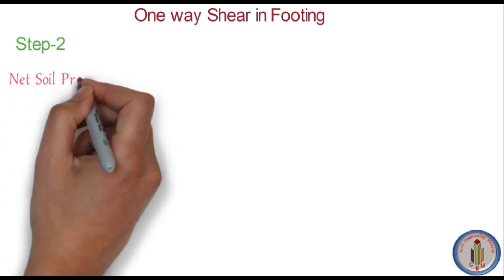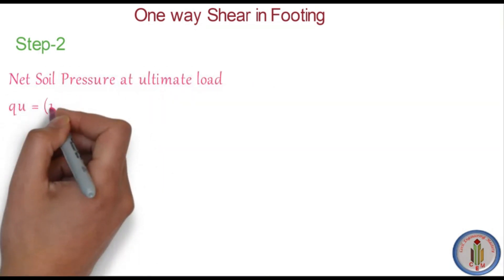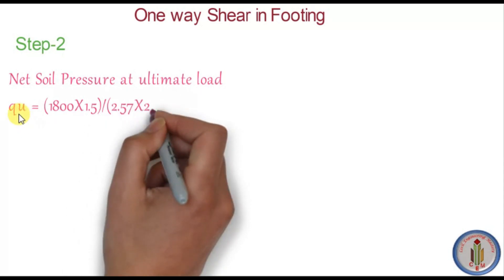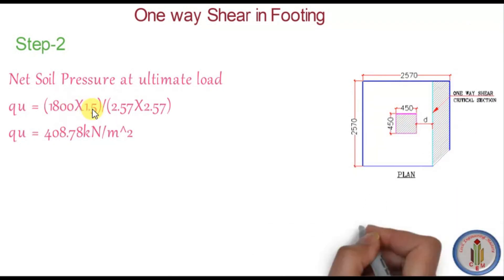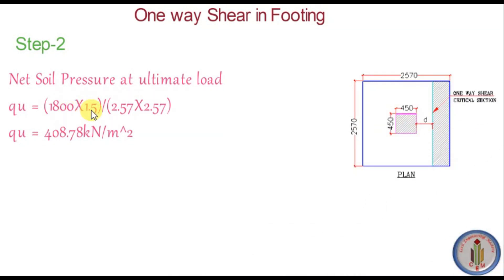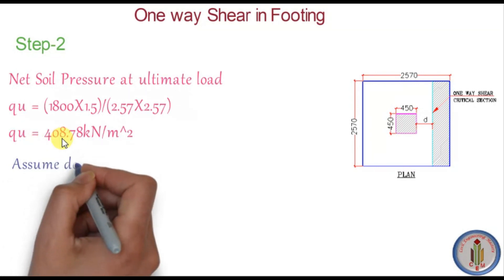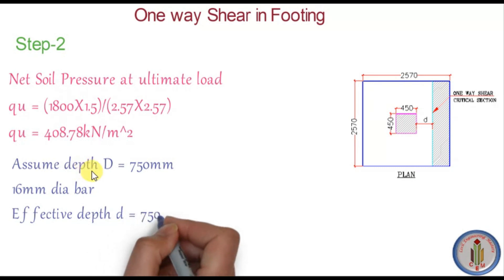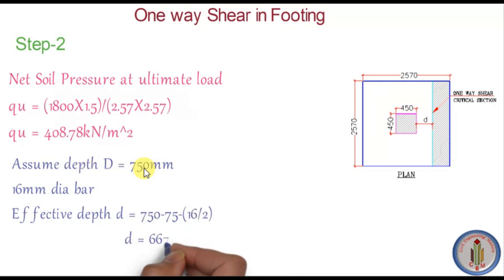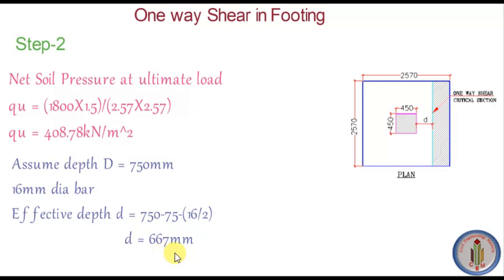Next, let's calculate the net soil pressure at ultimate load. Qu is the net soil pressure at ultimate load, which is load divided by area, multiplied by a factor of safety of 1.5. We get Qu as 408.78 kN/m². We then assume a depth of 750 mm with 16 mm diameter bars, giving an effective depth of 750 − 75 (clear cover) − 16/2 = 667 mm.